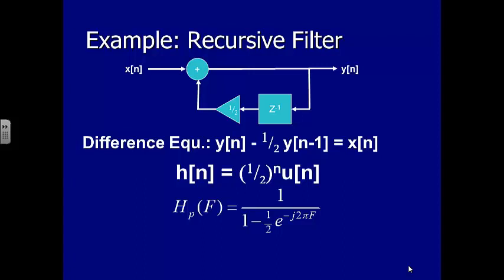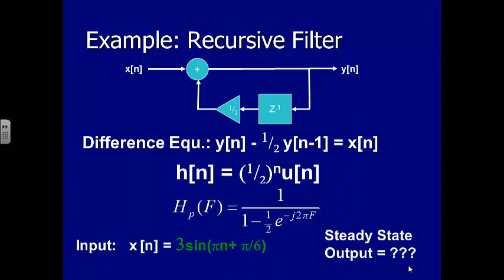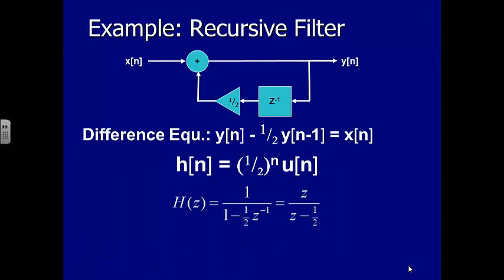Using our simple recursive filter example — the one-half Z to the minus one feedback path — we've already derived the difference equation and H of F. Say we want to know what happens with input x[n] = 3 sin(πn + π/6). I can derive H of Z very quickly. The frequency is one-half, and transforming the difference equation gives H of Z = Z / (Z − 1/2). I want to turn this function of Z into a function of frequency.